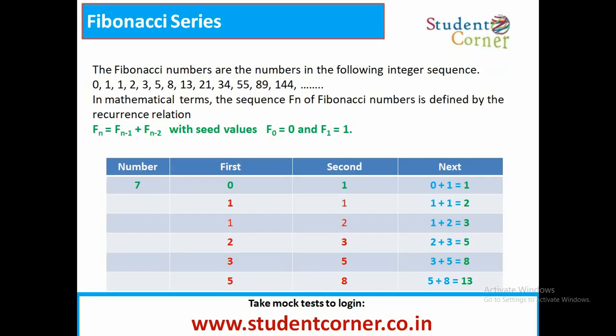Fibonacci series. Part 1 Fibonacci series. The Fibonacci numbers are the numbers in the following integer sequence: 0, 1, 0 plus 1 equals 1, 1 plus 1 equals 2, 1 plus 2 equals 3, 2 plus 3 equals 5, 3 plus 5 equals 8, 5 plus 8 equals 13, and so on. Mathematically we represent F of n is equal to F of n minus 1 plus F of n minus 2, with seed values of F of 0 equals 0 and F of 1 equals 1.